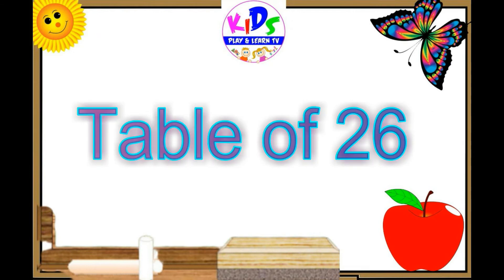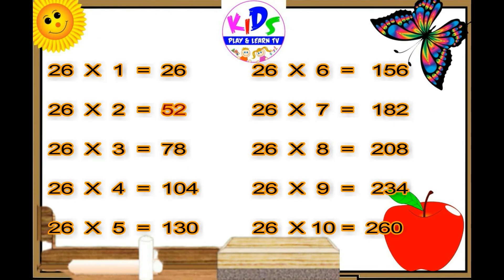Let's repeat. 26 ones are 26. 26 twos are 52. 26 threes are 78. 26 fours are 104. 26 fives are 130.